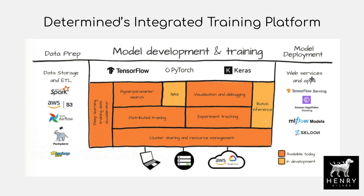Model deployment is not currently a part of the Determined AI stack. The first feature inside the platform is cluster sharing and resource management. In a lunch and learn with Determined AI — their program for outreach on teaching people how to use the platform — they implemented the DETR object detection system with transformers from Facebook and showed you how to run large-scale experimentation with it.